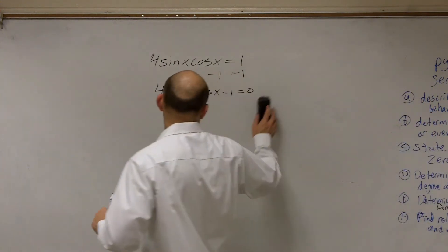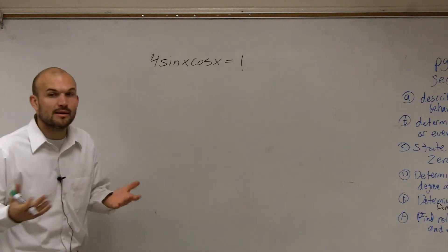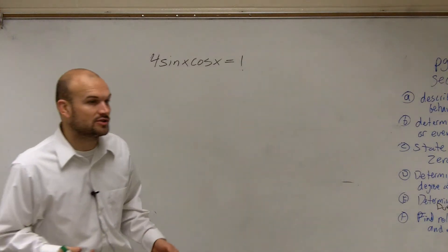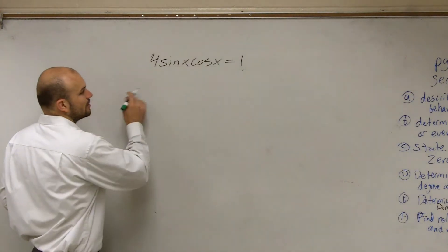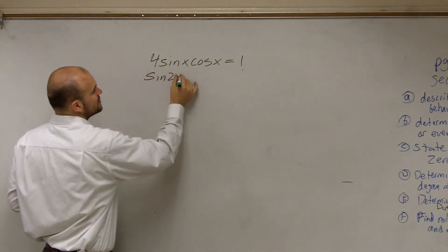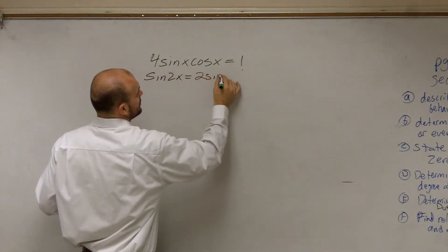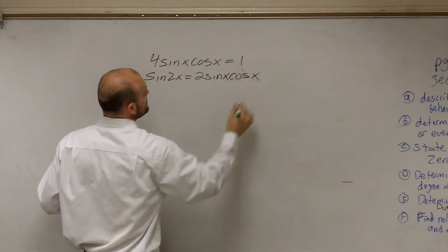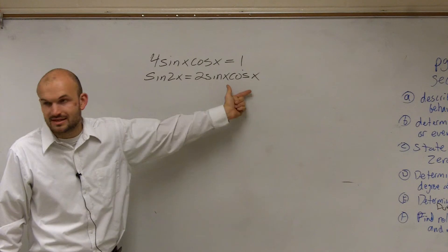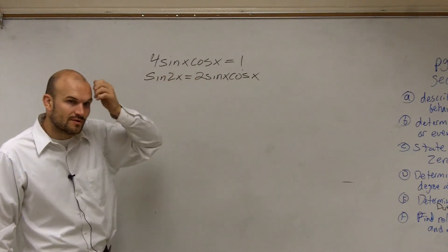However, the one important thing that we need to look at is remember we're talking about our new formulas, right? This multiple angle for the sine. So if I can say that the sine of 2x equals 2 sine of x times cosine of x, right? This 2 sine of x cosine of x is equal to the sine of 2x.